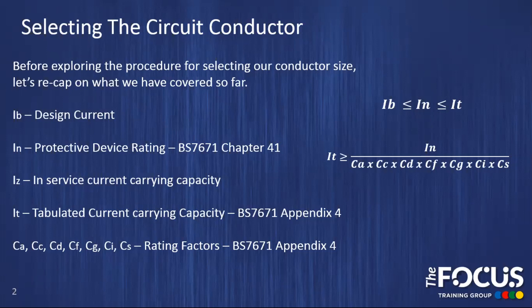So from what we've learned so far, we have these two formulas. The top one tells us that our design current should be less than or equal to our protective device rating IN. Therefore, our protective device will not operate when our load is carrying out its normal duties. And our IN should be less than or equal to the IT, the value of our tabulated current carrying capacity of our selected cable. Therefore, our circuit conductor will not rise to a dangerous temperature before the protective device operates.